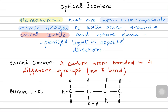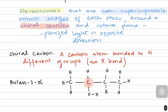I want you to focus on carbon number 2, which has the OH group on it. You're obviously numbering from the left side. So I have the OH group on carbon number 2. You can notice it has OH at the bottom, and on the left side it has a CH3 group attached to the main carbon that's in focus right now.